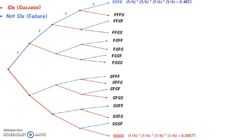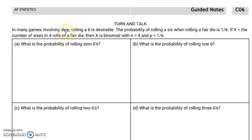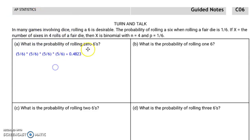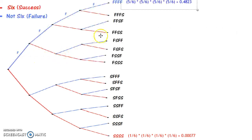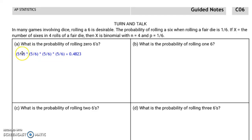This scenario answers the first part on the page: what is the probability of rolling zero 6s? We know that the probability of rolling zero 6s is going to be approximately 0.4823, because in our tree diagram there's only one scenario in which we fail to roll a 6. So 5/6 × 5/6 × 5/6 × 5/6 is going to give us the correct answer.